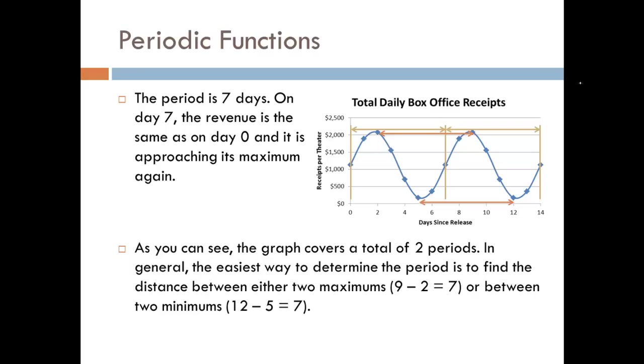We could do the same thing using the minimums. We have a minimum on the fifth day and again on the twelfth day. So twelve minus five would be seven. So again, our period for this function is seven days, which makes sense to what we would think in the real world.